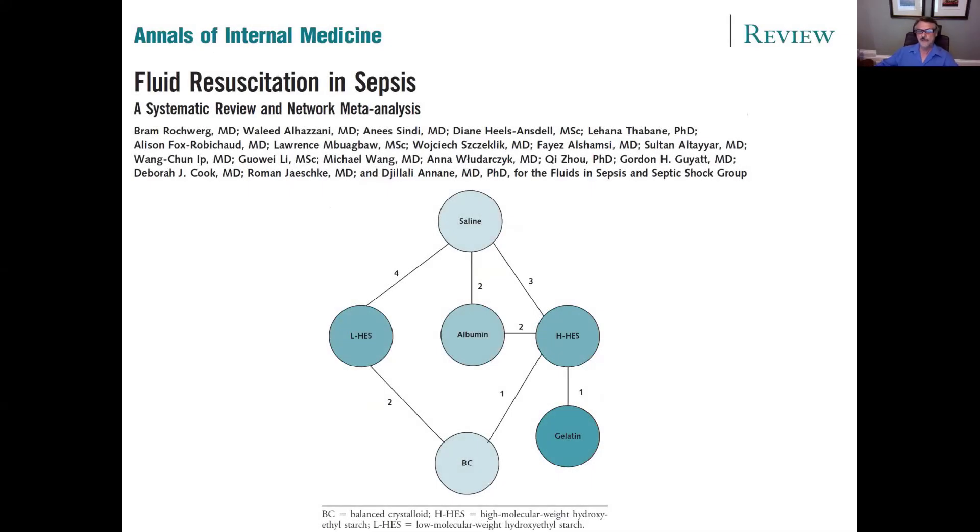I'm going to show you, use as illustrations, two different network meta-analyses. The one that's going to illustrate an alternative approach that we're not particularly fond of, of using something called SUCRA to make inferences about which treatment is better. This meta-analysis looked at what fluids should be given to resuscitate people who have sepsis. There's saline, low and high molecular weight hydroxyethyl starches, gelatin, and balanced crystalloid. Those are the options. Which should people give?